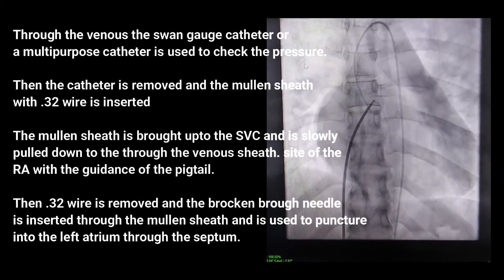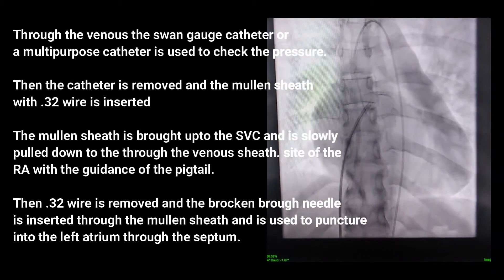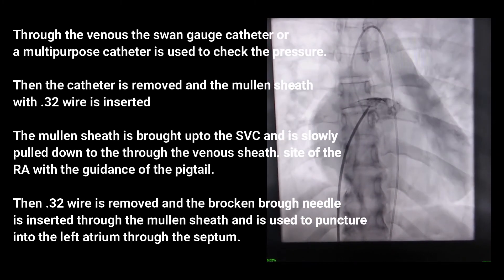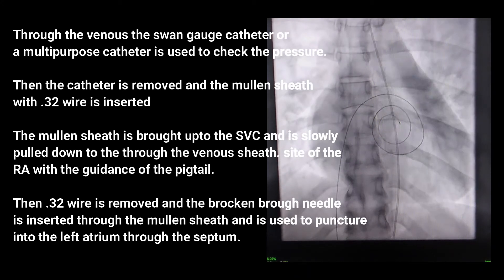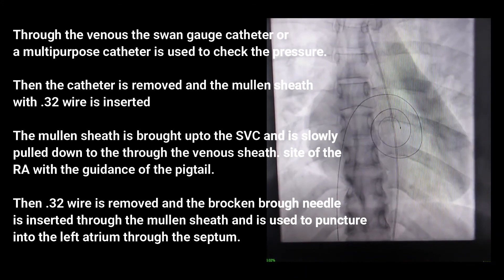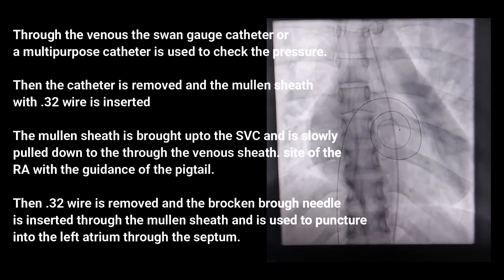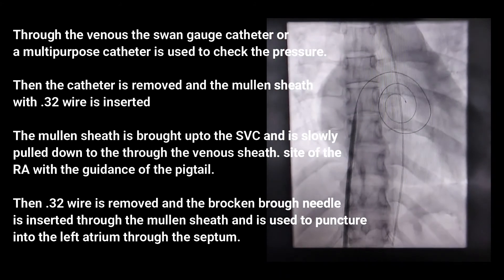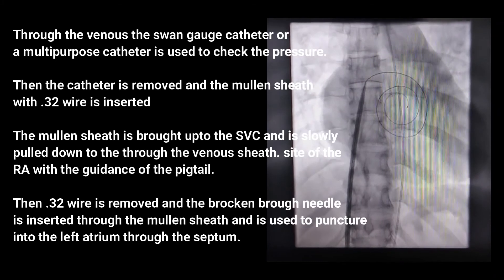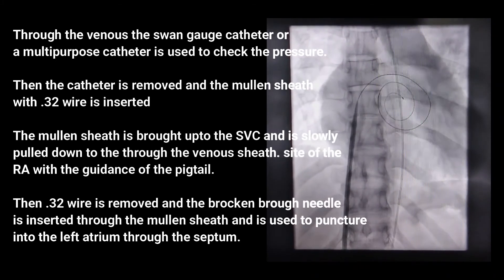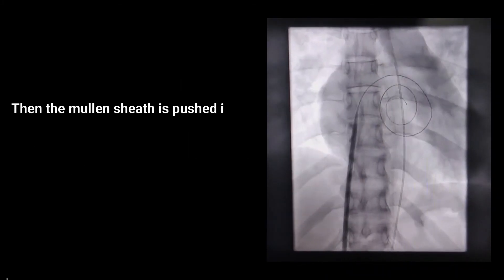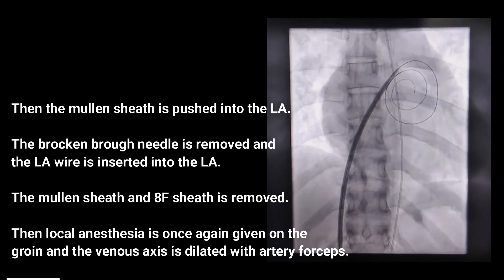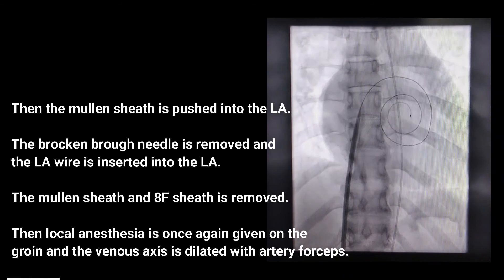The catheter is removed and the Mullin sheath with a 0.32 wire is inserted. The Mullin sheath is brought up to the SVC and slowly pulled down through the venous sheath to the site of the fossa ovalis, with guidance from the pigtail. The 0.32 wire is removed and the Brockenbrough needle is inserted through the Mullin sheath and used to puncture into the left atrium through the septum.